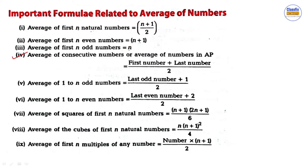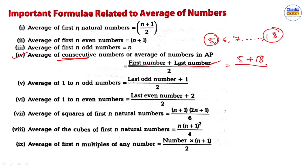Suppose we have consecutive numbers. Take a short number series: the first number is 5, the last number is 18. The formula is: first number plus last number divided by 2. So 5 plus 18 divided by 2 equals 23 divided by 2, which gives 11.5. So the answer is 11.5.